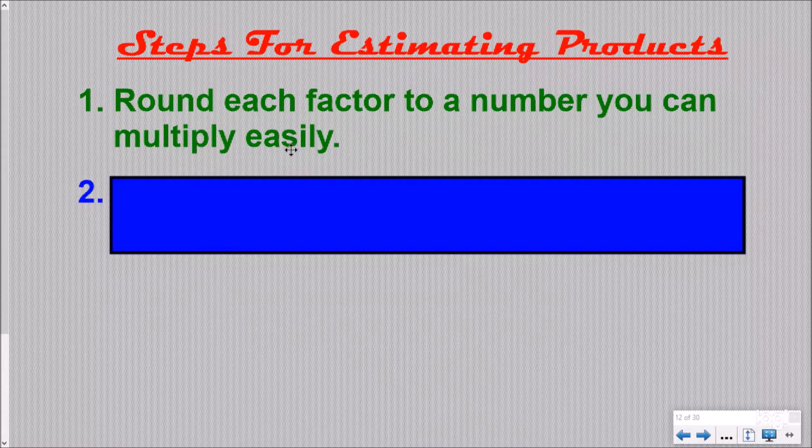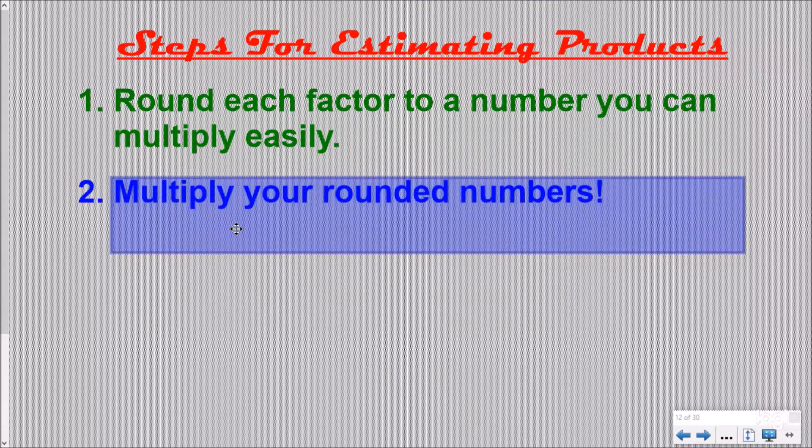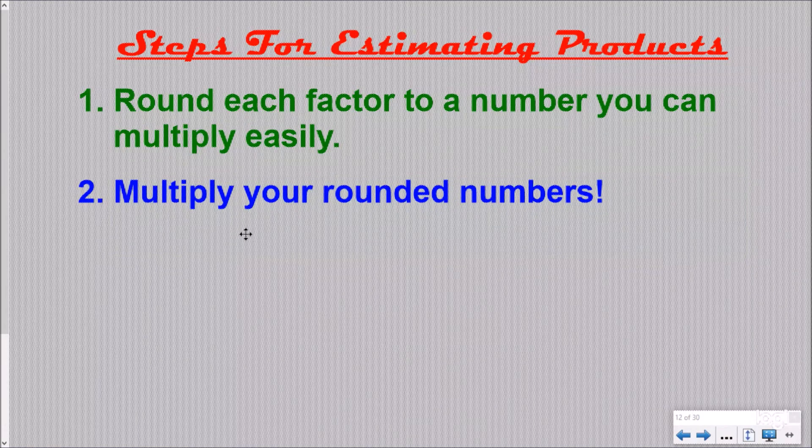And so when you estimate, you want to round to at least the ones place, but you want to round to something that you can easily do in your head if possible. Because you don't want to spend a long time estimating when you then actually have to go and solve the problem. And then number two, after you round those, you are going to multiply your rounded numbers. And that's going to give you something that should be about the right answer.